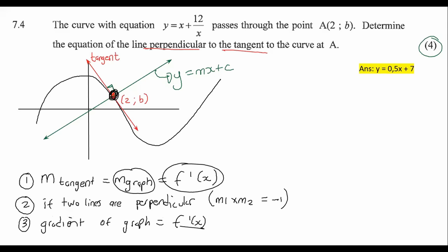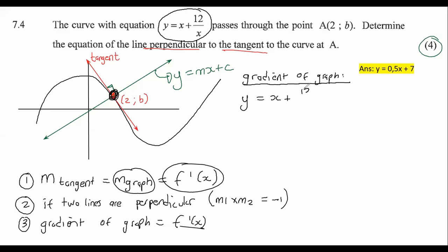So how are we going to do this? We can first go find the gradient of the graph using the first derivative. Before we can take the first derivative, we first need to rearrange this equation and make it a bit more user-friendly. I'm going to bring that x to the top. Now we can take the first derivative.